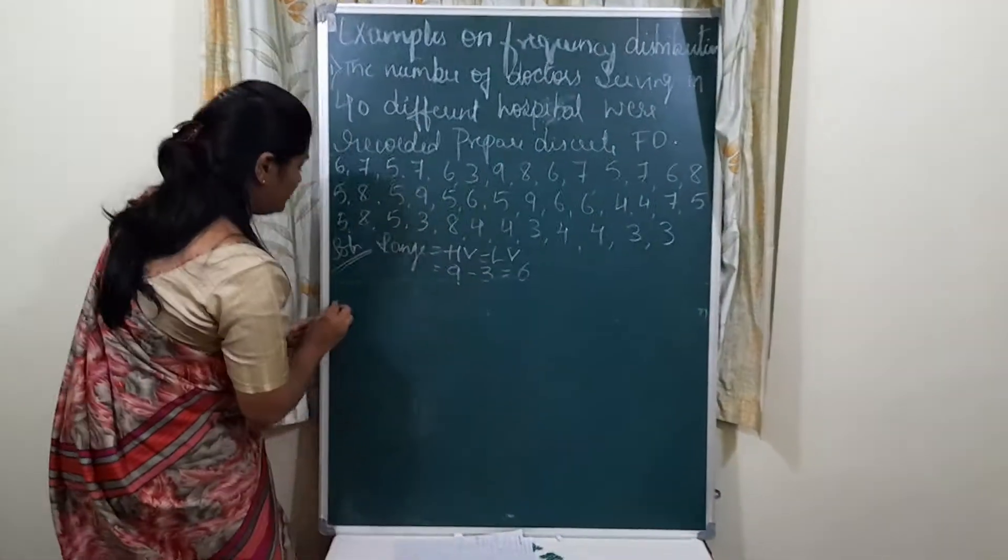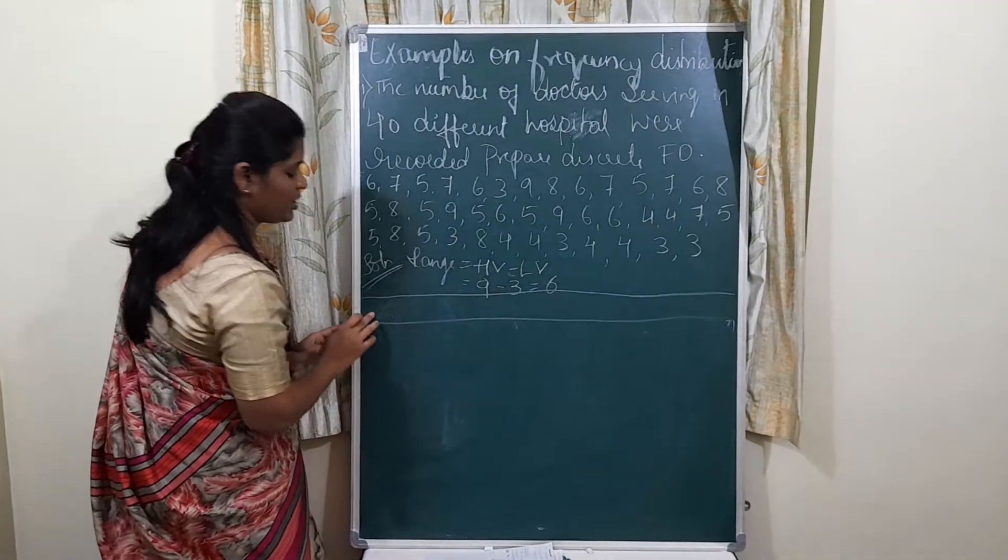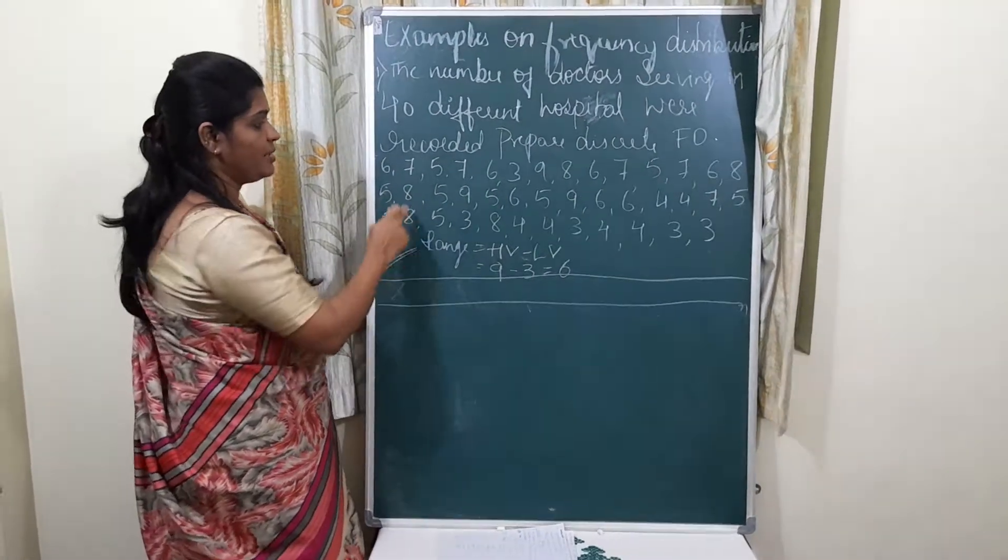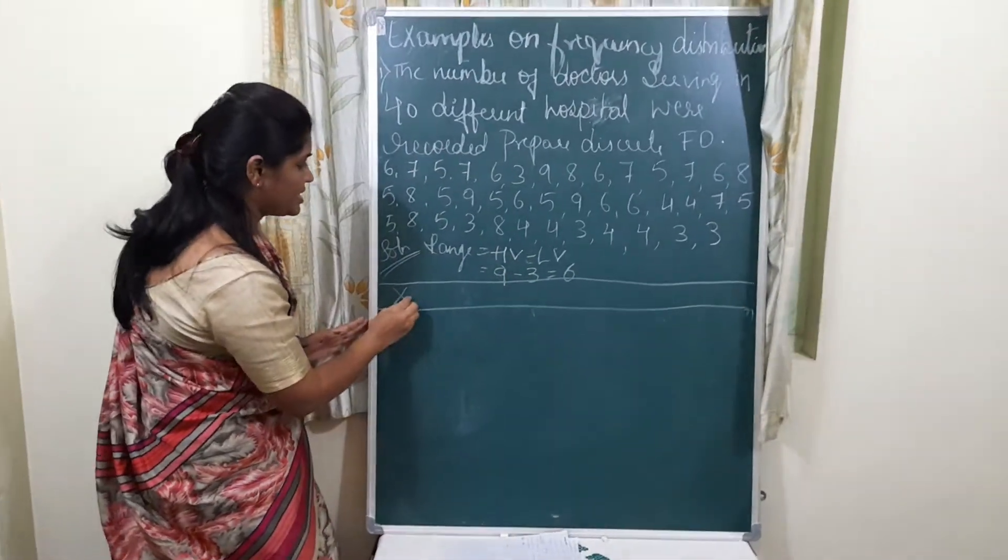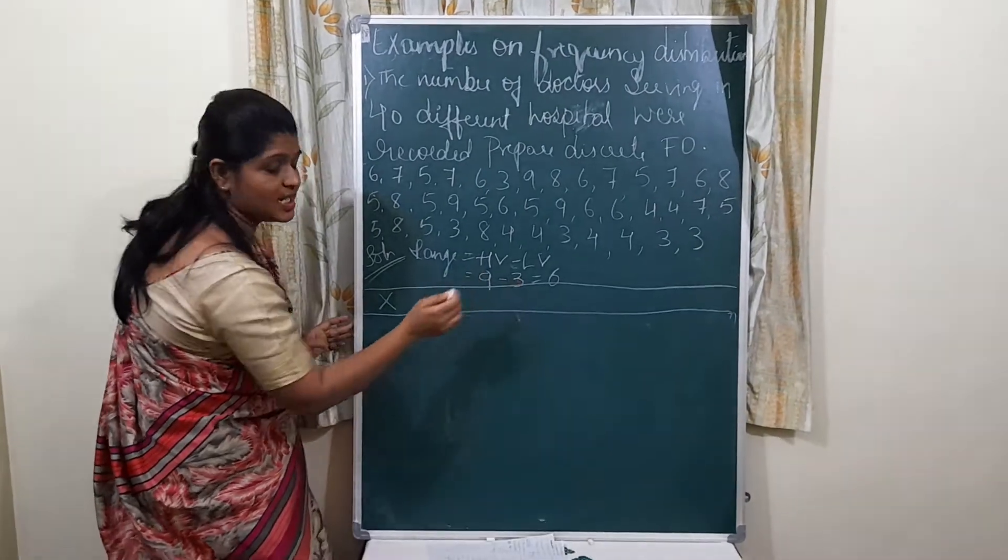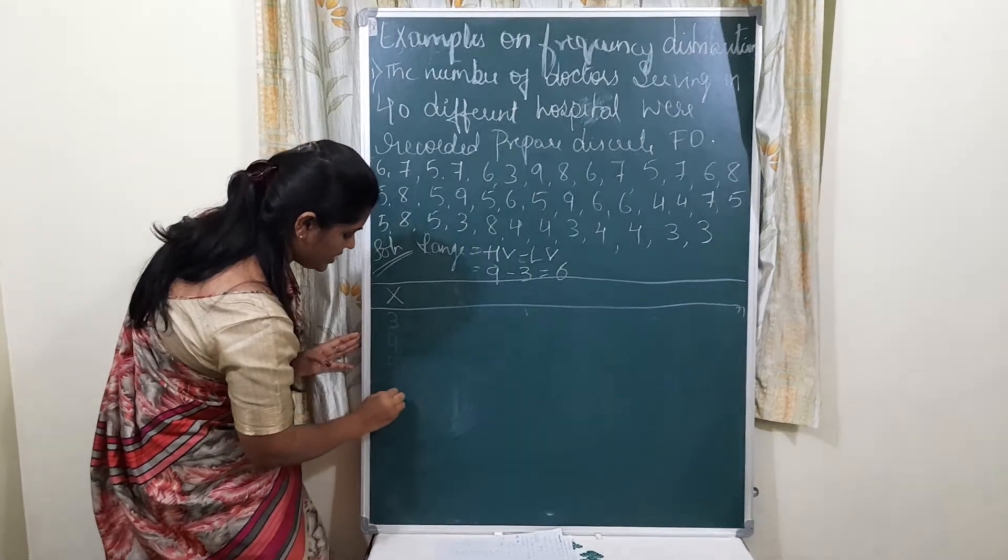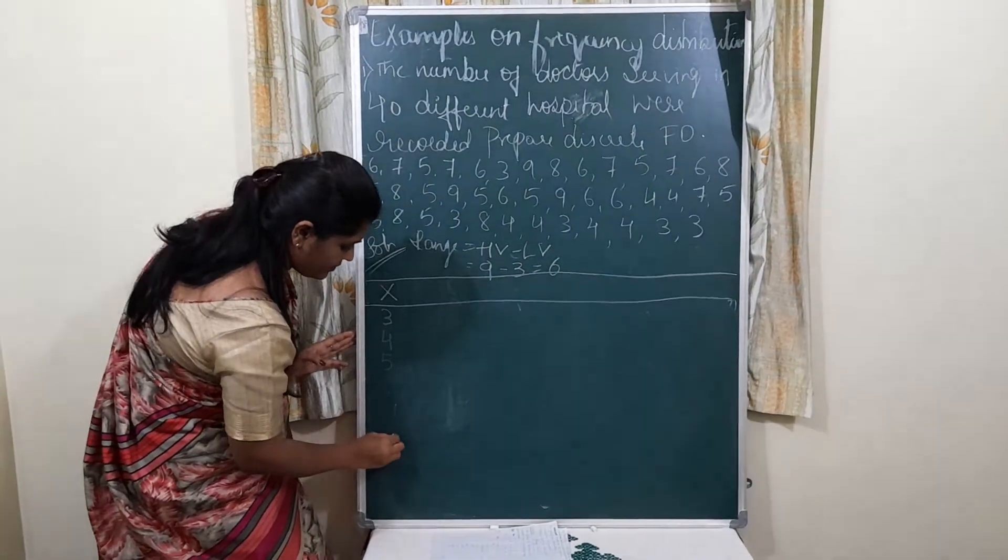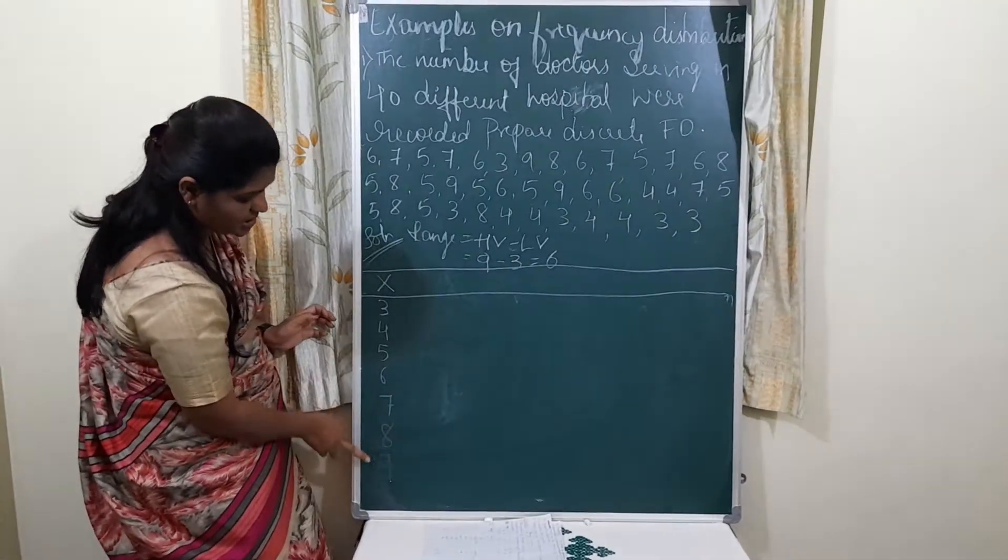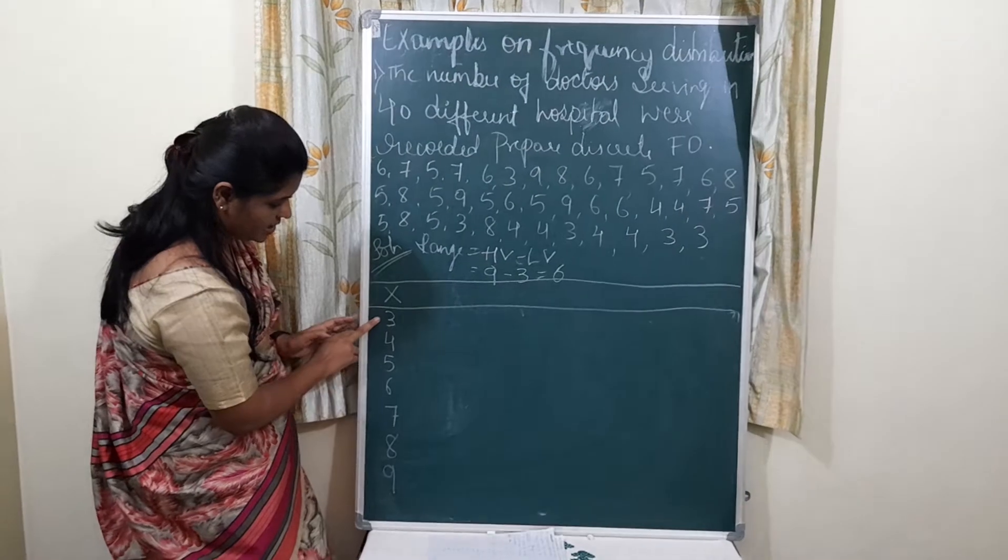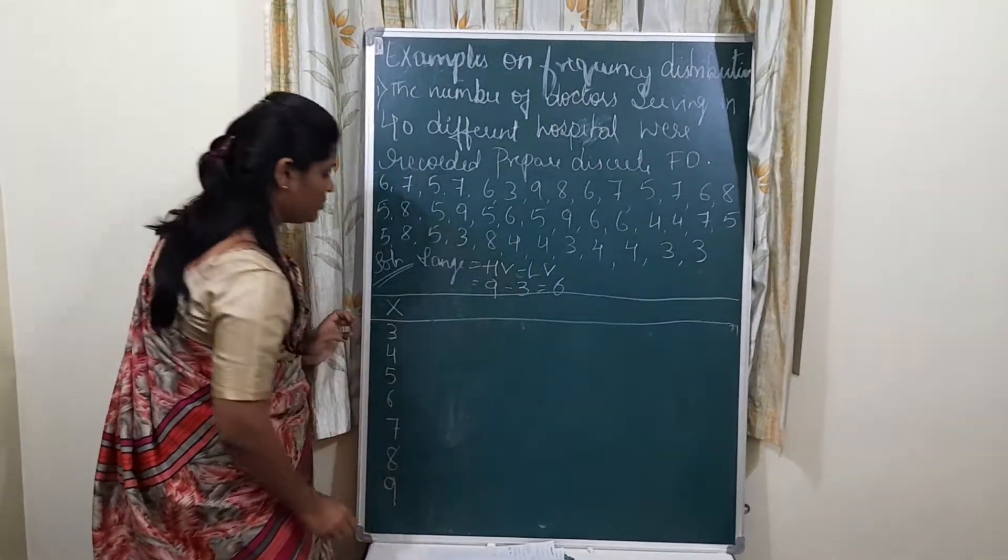Coming to the table part. First, what it means by x - x is a variable. The observation is variable. X is variable. Highest number is 9 and the lowest is 3. 3, 4, 5, 6, 7, 8, 9. This is lowest value, this is highest value.